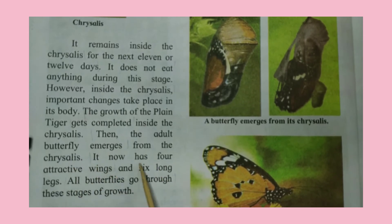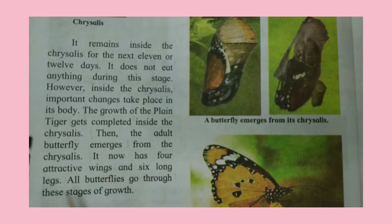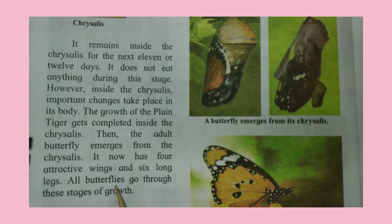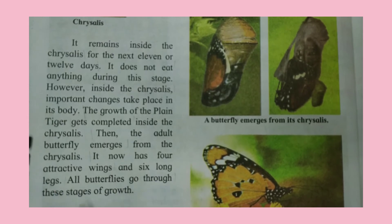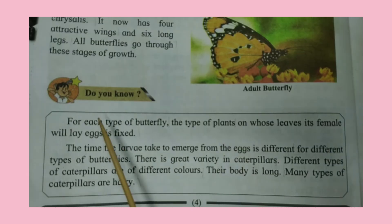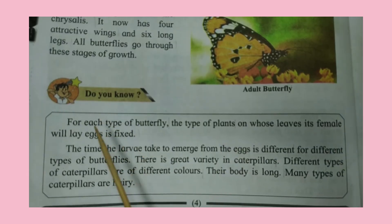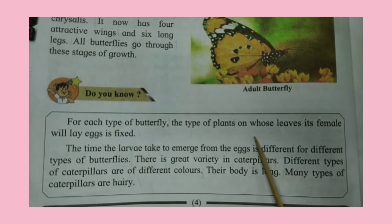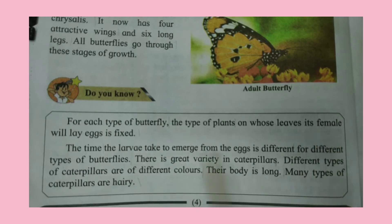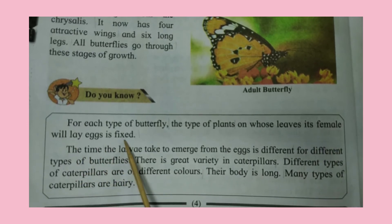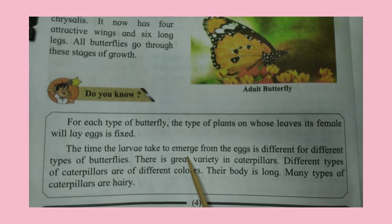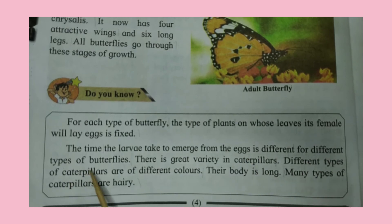It now has four attractive wings and six long legs. All butterflies go through these stages of growth. Do you know? For each type of butterfly, the type of plant on whose leaves its female will lay eggs is fixed. The time the larvae take to emerge from the eggs is different for different types of butterflies.